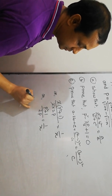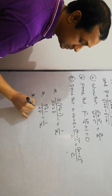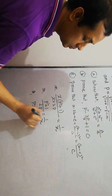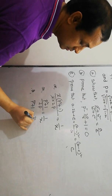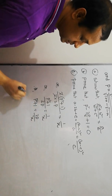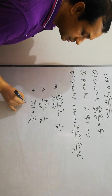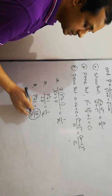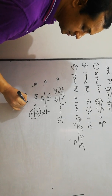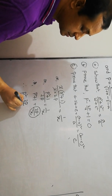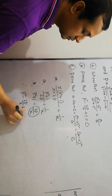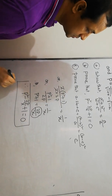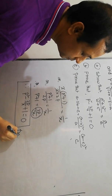Alternatively: p² + 1 equals 2p by x. Taking everything to the left side: p² − 2p/x + 1 equals 0. Proved.